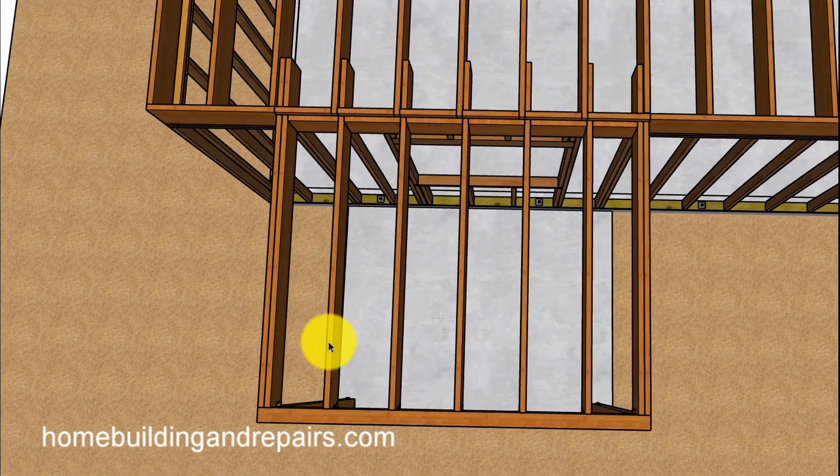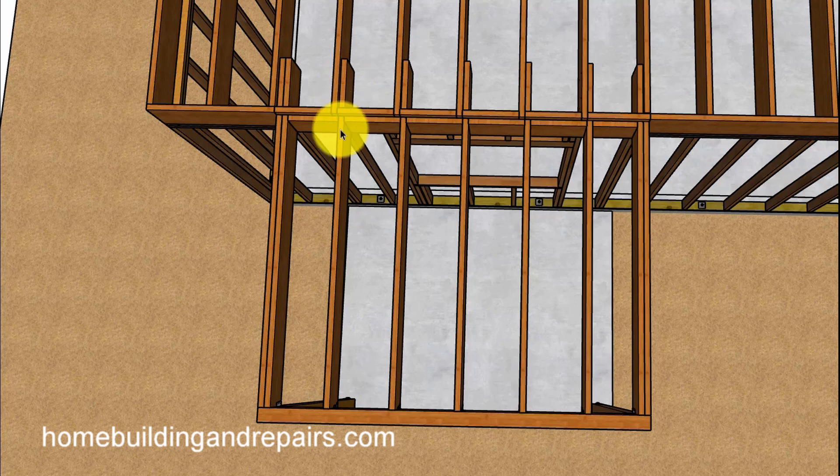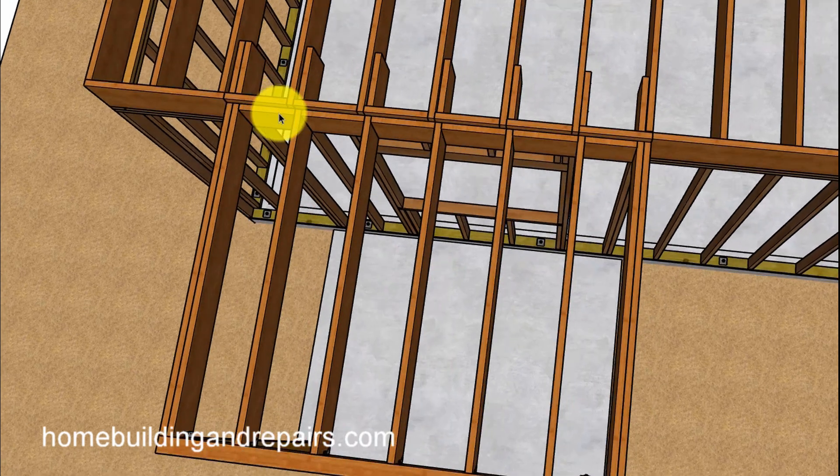So here you can see where the joists are coming through. In video number one, it is attaching to a ledger and the ledger is lag screwed to the rim joists. This one here is going to be a lot stronger.